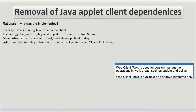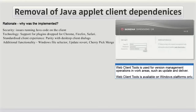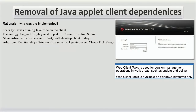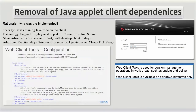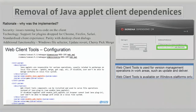If your environment does not allow Java, or you are using a browser that does not support Java applets, web client tools are used instead. The web client tools are disabled by default but can be enabled by configuring the web.xml file on the server and installing the tools on the client.